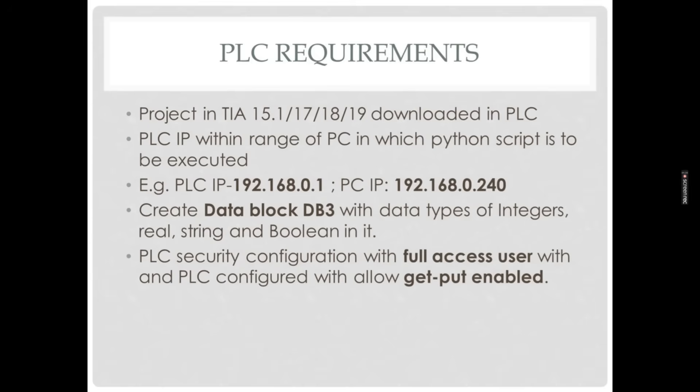Here are the PLC requirements. We will be doing a project in TIA Portal version 15.1, 17, 18, or 19. We just need to create a project and download it to the PLC. Then we need to set the PLC IP within the range of the PC on which the Python script is to be executed. For example, if the PLC IP address is 192.168.0.1, then the PC IP should be set to 192.168.0.240.